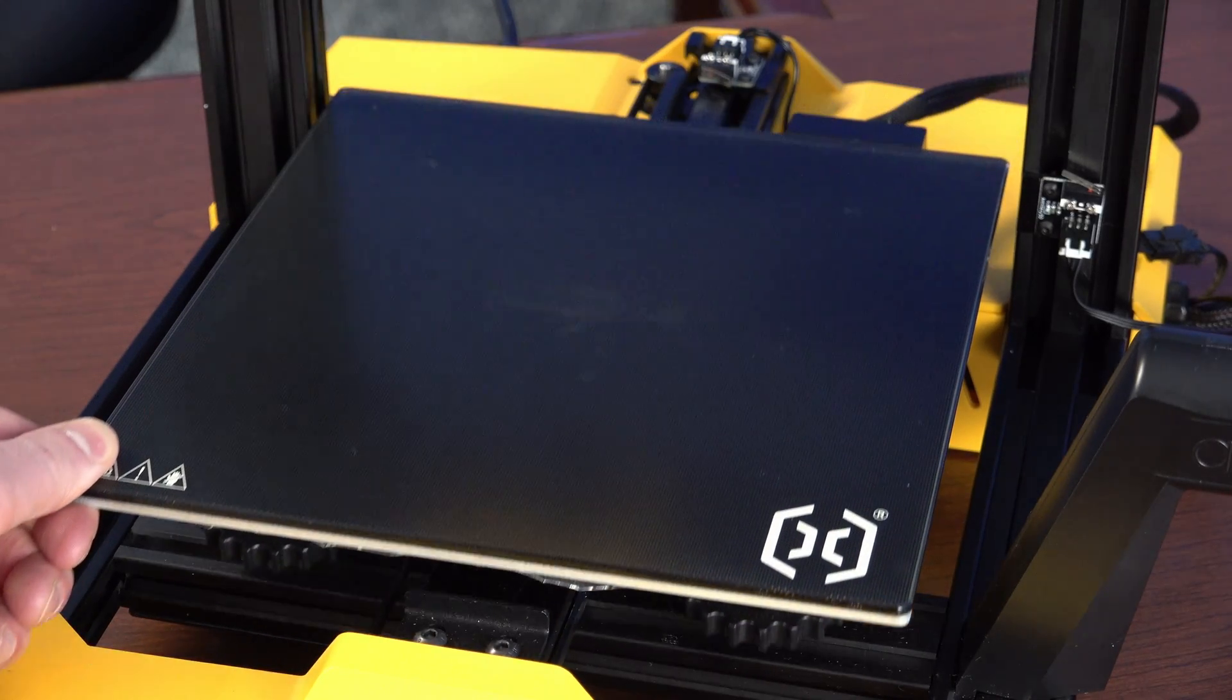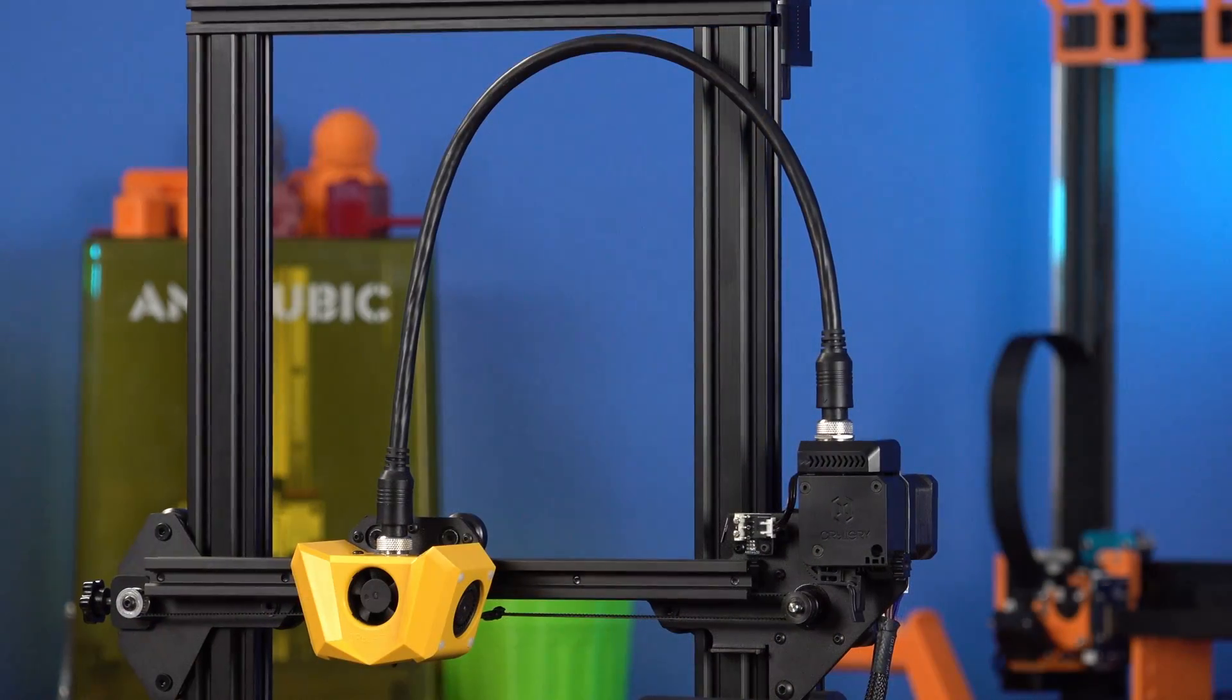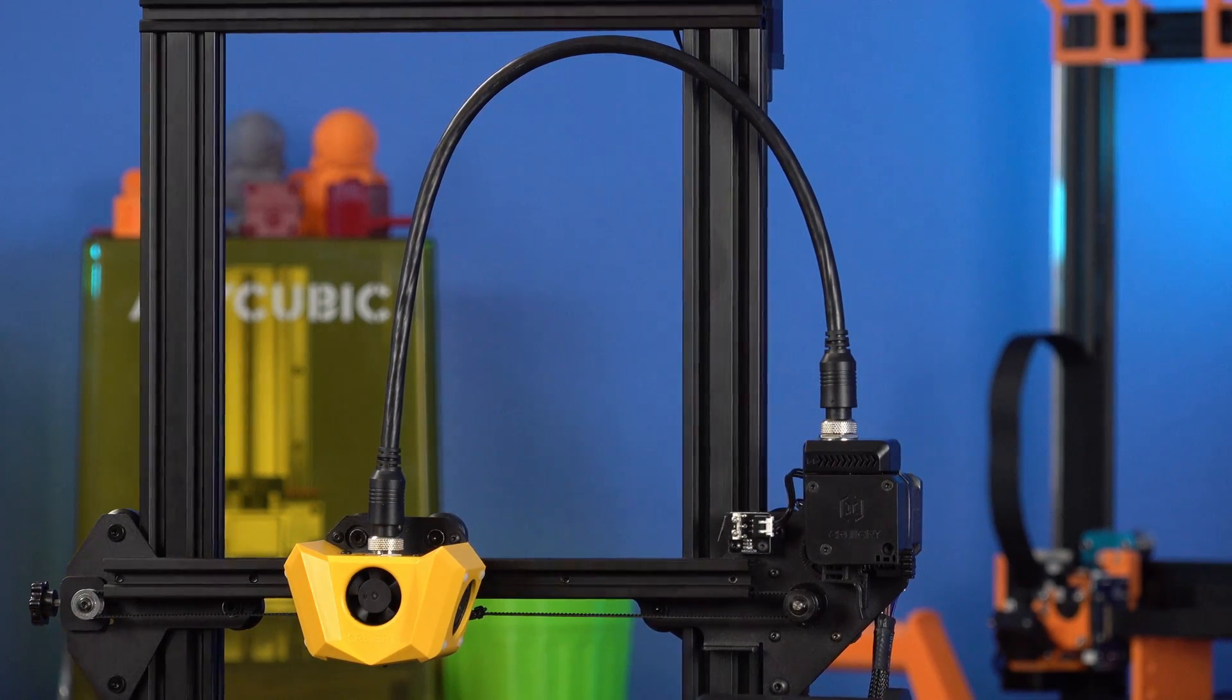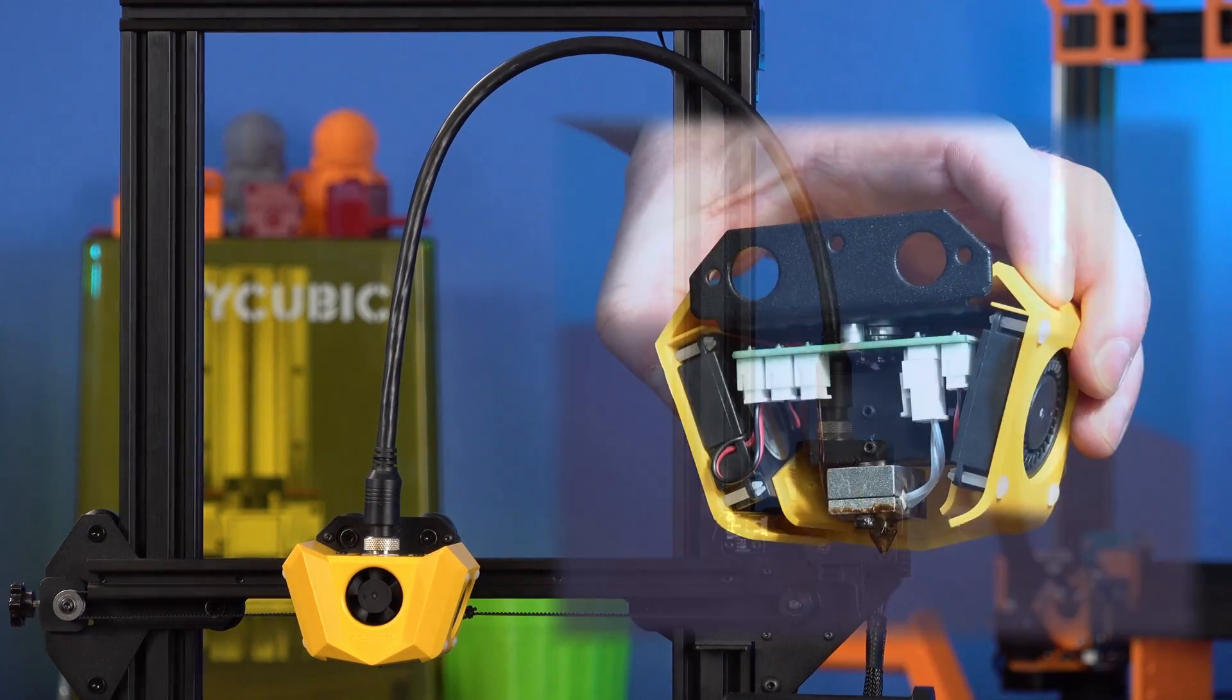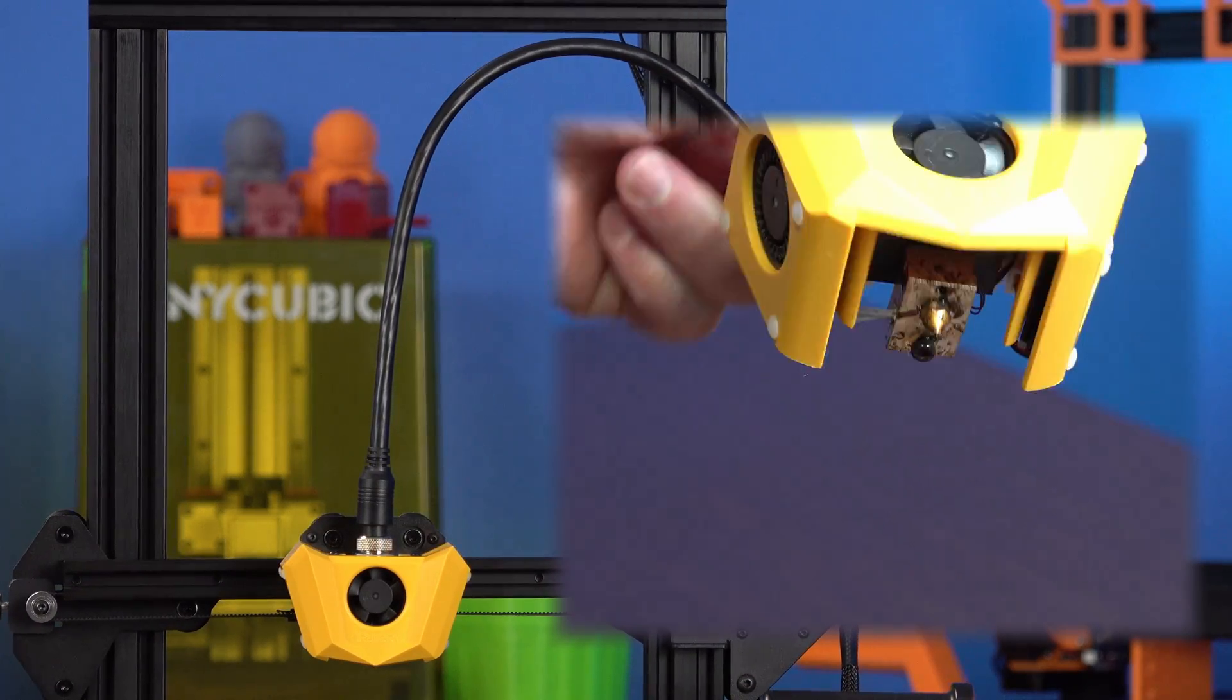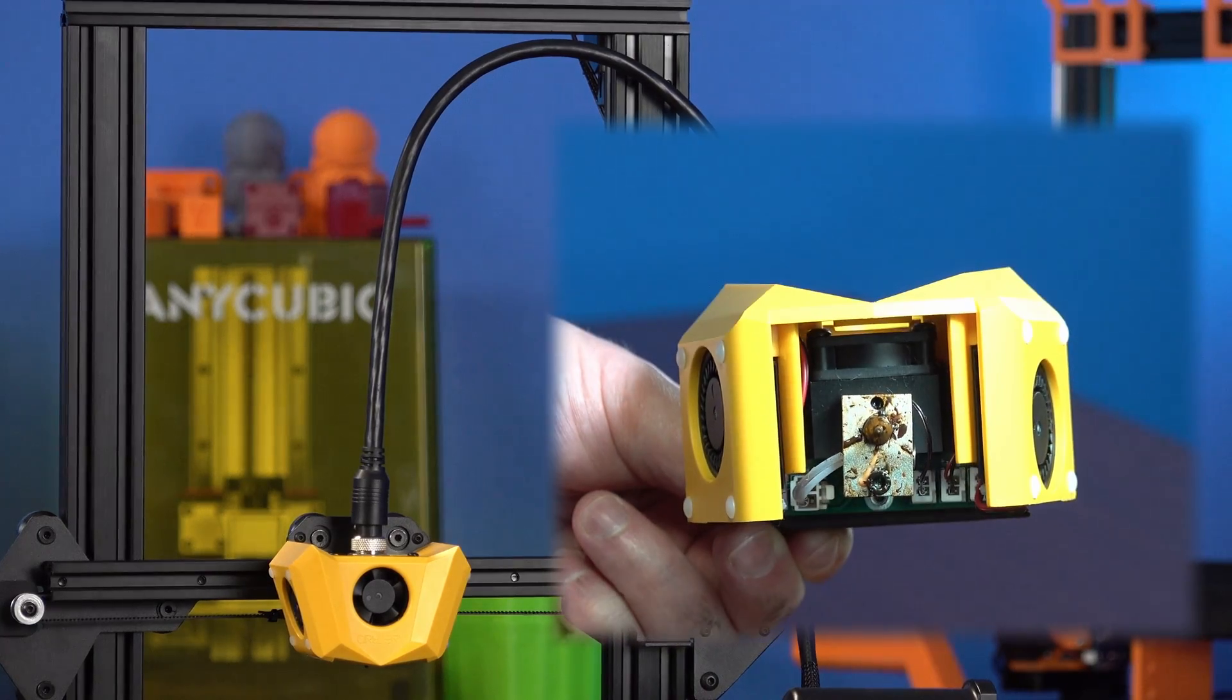It's got an ultra-base style glass build surface fixed to an aluminum heat plate and carriage. For the extruder, they have gone with a Titan clone that feeds their proprietary integrated Bowden tube and electrical cable. The hotend is a modular V6 style nozzle and heat block with their own developed heat break. It is also fitted with two part cooling fans directing air to your print from two sides.